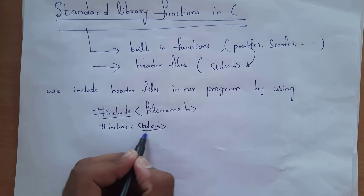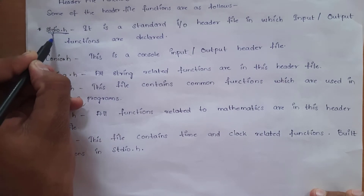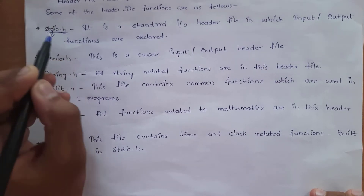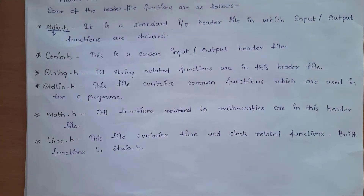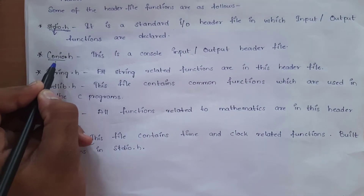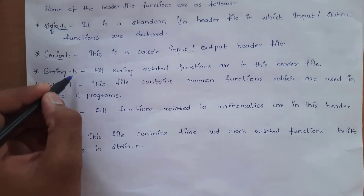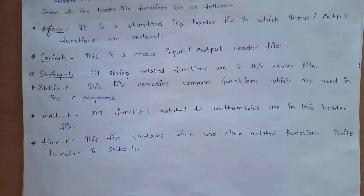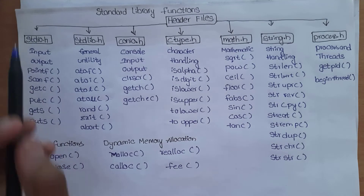We include header files in our program using #include, for example #include <stdio.h>. stdio.h is the standard input/output header file, containing all input and output functions such as printf and scanf. conio.h stands for console input/output. string.h contains all string functions. stdlib.h stands for standard library. math.h contains all mathematical functions. time.h contains time and clock-related functions.